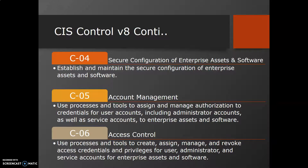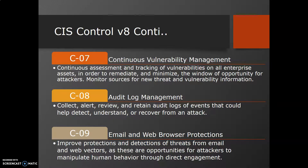The sixth control is Access Control — using processes and tools to create, assign, manage, and revoke access credentials and privileges for user and administrator accounts. Once an account is created, there should be a multi-level approval process to ensure proper authorization is granted on the principle of least privilege, on a need-to-know basis, with segregation of duties. Periodic user access reviews should be conducted. When a user leaves the organization, accounts should be inactivated. When a user transfers to another team, all previous authorizations should be removed and access reassigned per the new role.